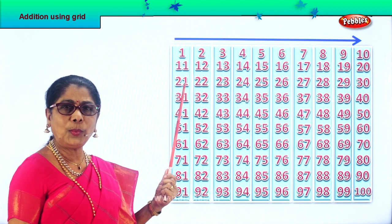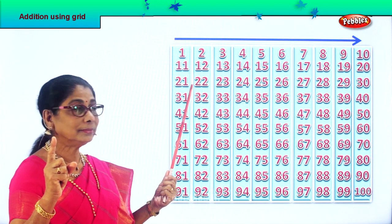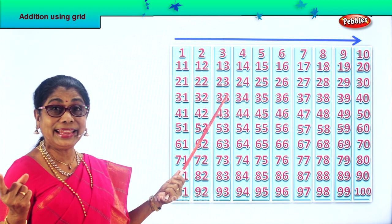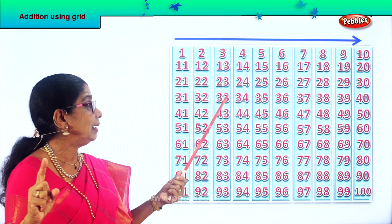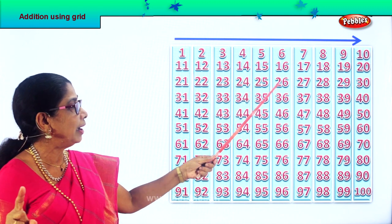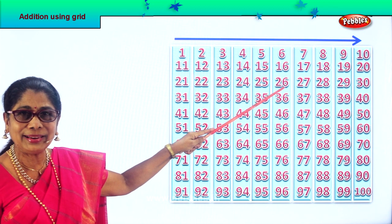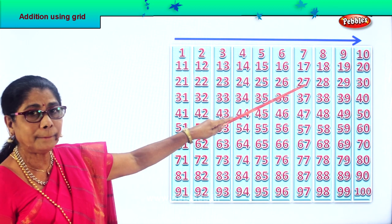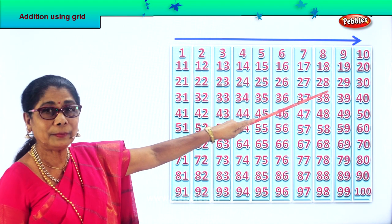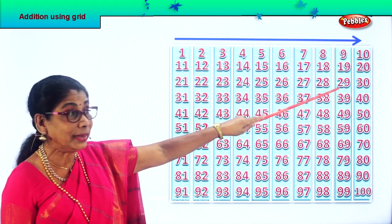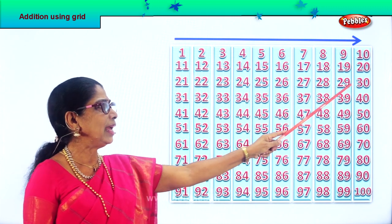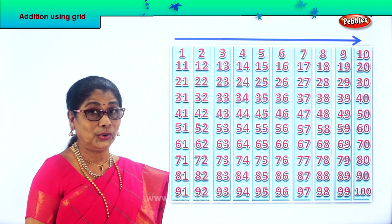Look at this number: 21. 21 plus 1 is 22. 22 plus 1 is 23. 23 plus 1 is 24. 24 plus 1 is 25. 25 plus 1 is 26. 26 plus 1 is 27. 27 plus 1 is 28. 28 plus 1 is 29. 29 plus 1 is 30. Very good.